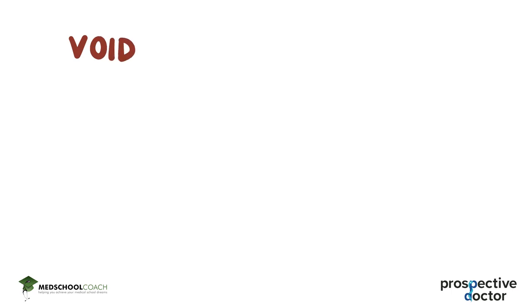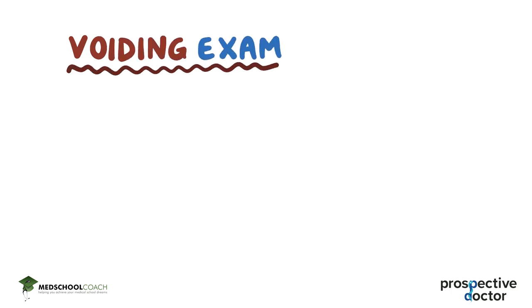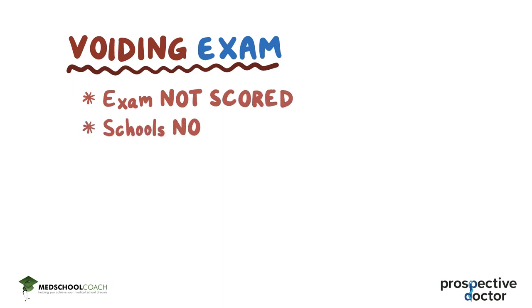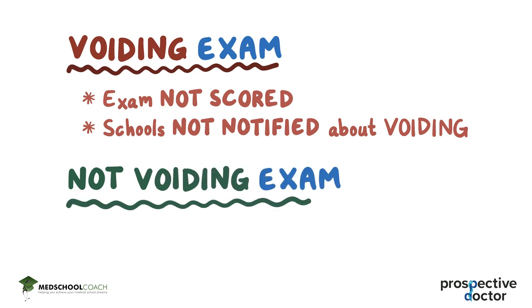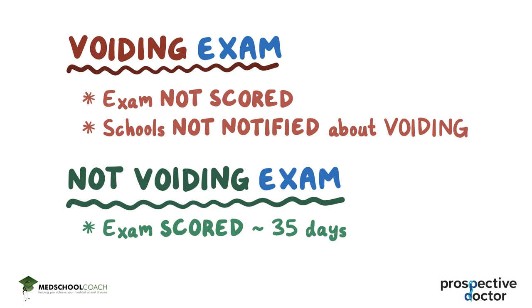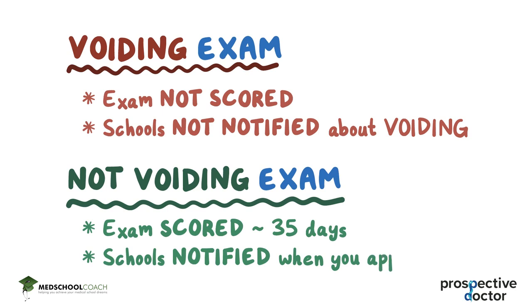After completing all four sections, you'll be given the option to void your MCAT exam. If you choose to void your exam, it will not be scored, and medical schools will not be notified. If you choose not to void your exam, it will be scored, and it will take about 35 days to receive your scores. All of your MCAT scores will be sent to medical schools when you apply, unless you voided your exam.